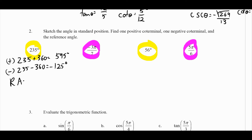For the reference angle of 235 degrees, it helps to draw the picture. The angle is a little more than halfway, so it exists in the third quadrant. To find the small angle between the x-axis and the terminating side, take 235 degrees minus 180, which gives 55 degrees. That's the reference angle.